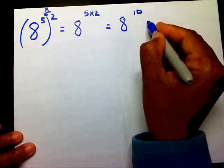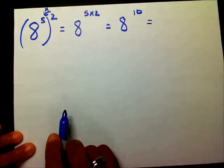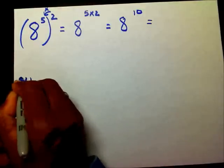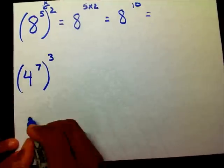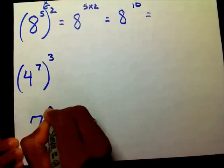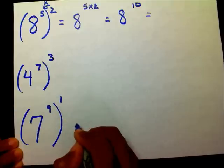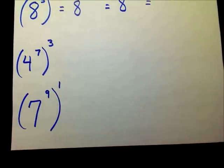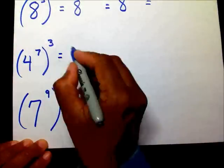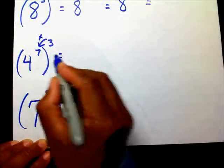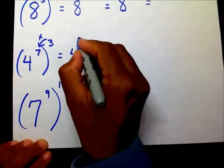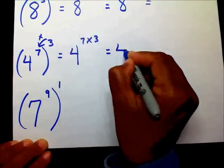And we could also simplify that some more. Please work this one and go through the actual process. Place your video on pause while you work those problems. So now, we're going to multiply four to the seventh raised to the third power. I'm going to multiply these two, giving me four to the seven times three, which is four to the twenty-first power.